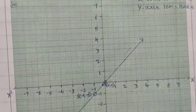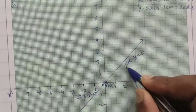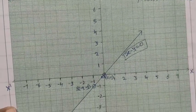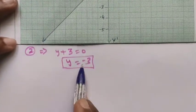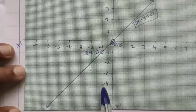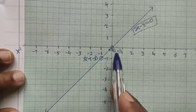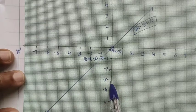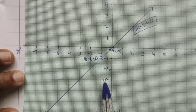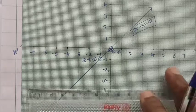This line represents the equation x minus y equal to 0. Next, for y equal to minus 3: below the x-axis at minus 3 on the y-axis, we draw a horizontal straight line. This is the line y equal to minus 3.